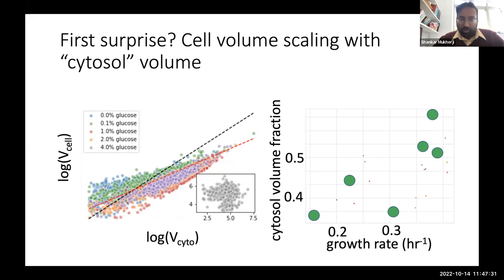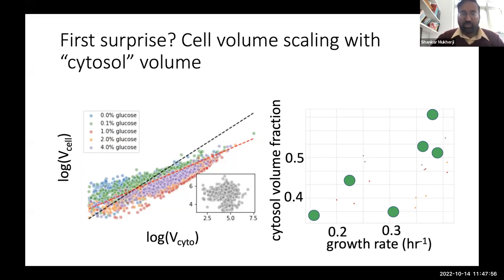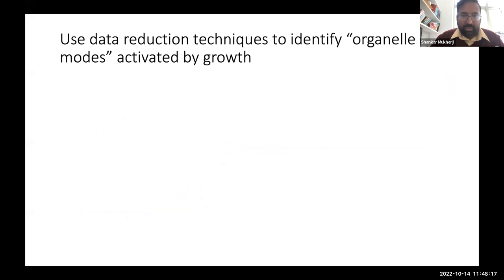This raises an interesting conundrum from the cell's perspective. If I need to grow the cell faster and as a consequence need to devote more of myself to cytoplasm, who takes the hit? The other organelles in the cell have to somehow compensate for this super-scaling behavior of the cytoplasm. That's where we could really leverage the power of our data set to understand how the cell is allocating this scarce resource among the organelles — whether it shares that sacrifice among all organelles or prioritizes certain ones over others.